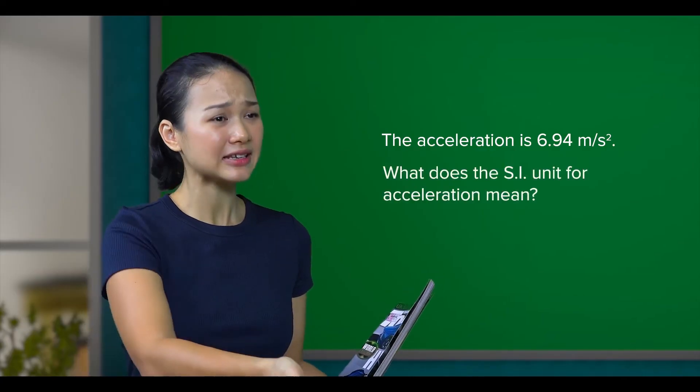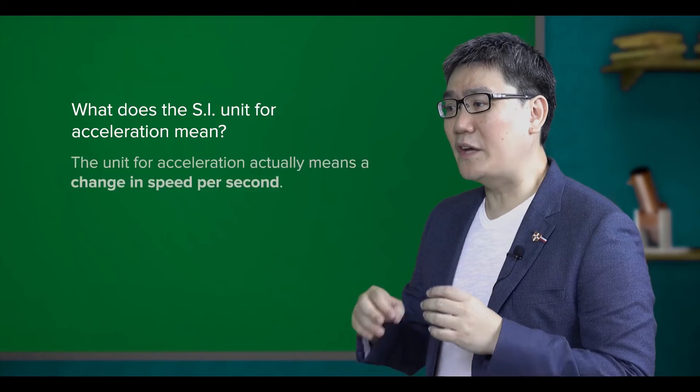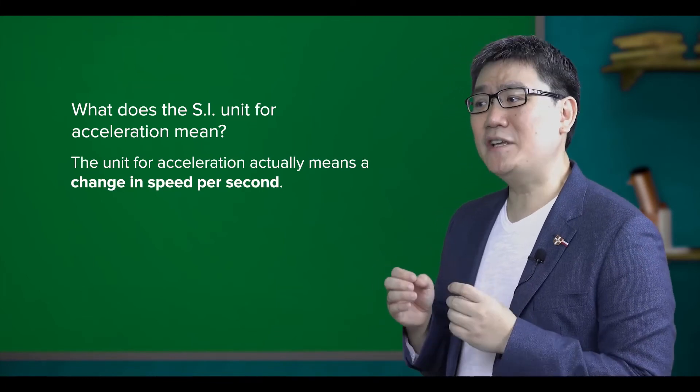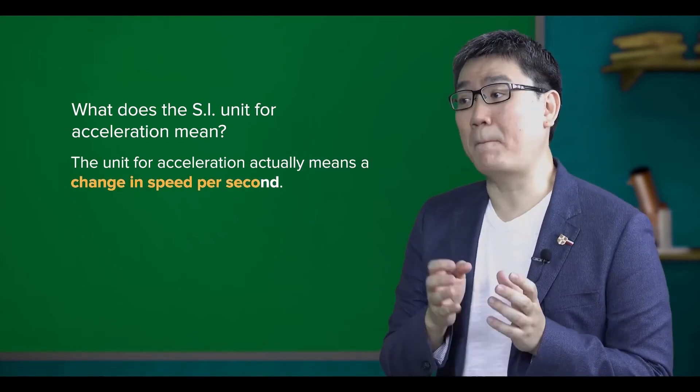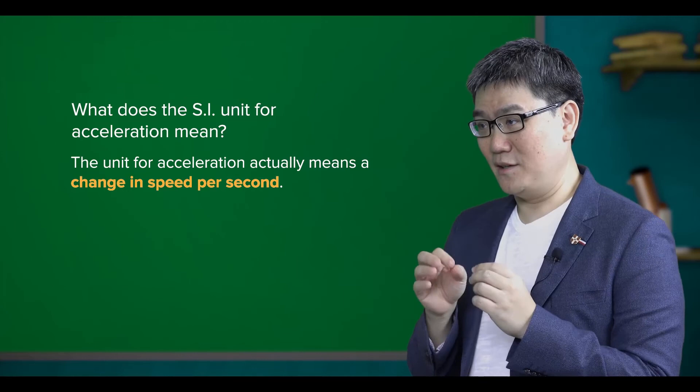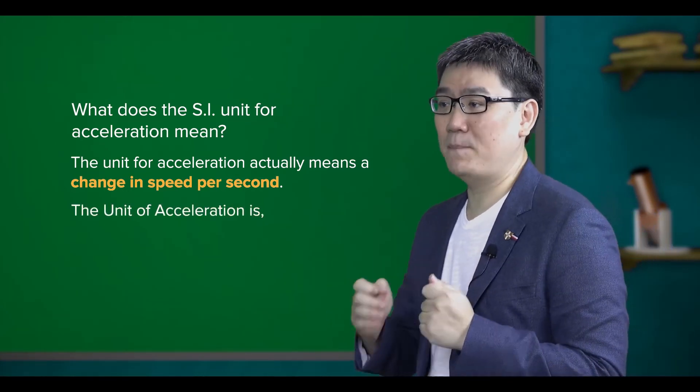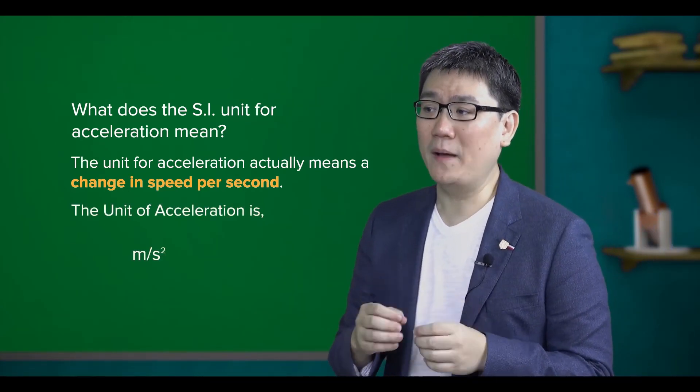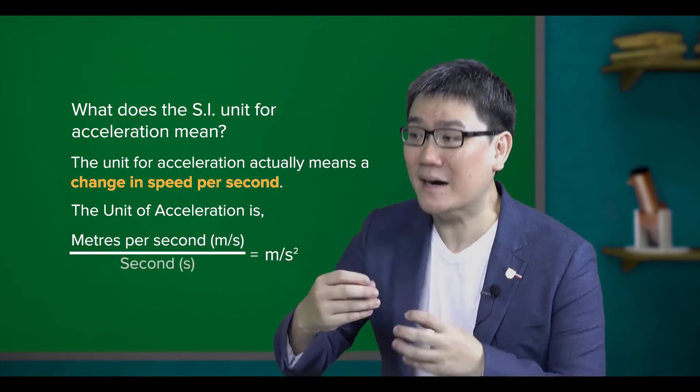I see, but what does this SI unit actually mean? The unit for acceleration actually means a change in speed per second. Thus, the unit for acceleration is meters per second squared, or meters per second per second.